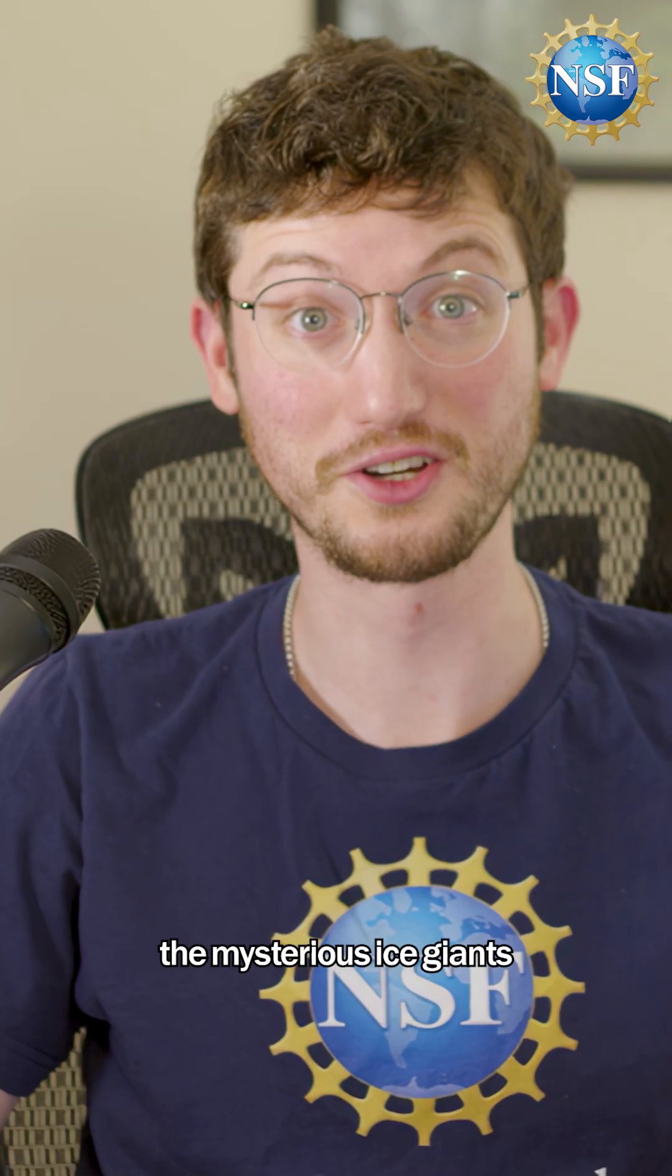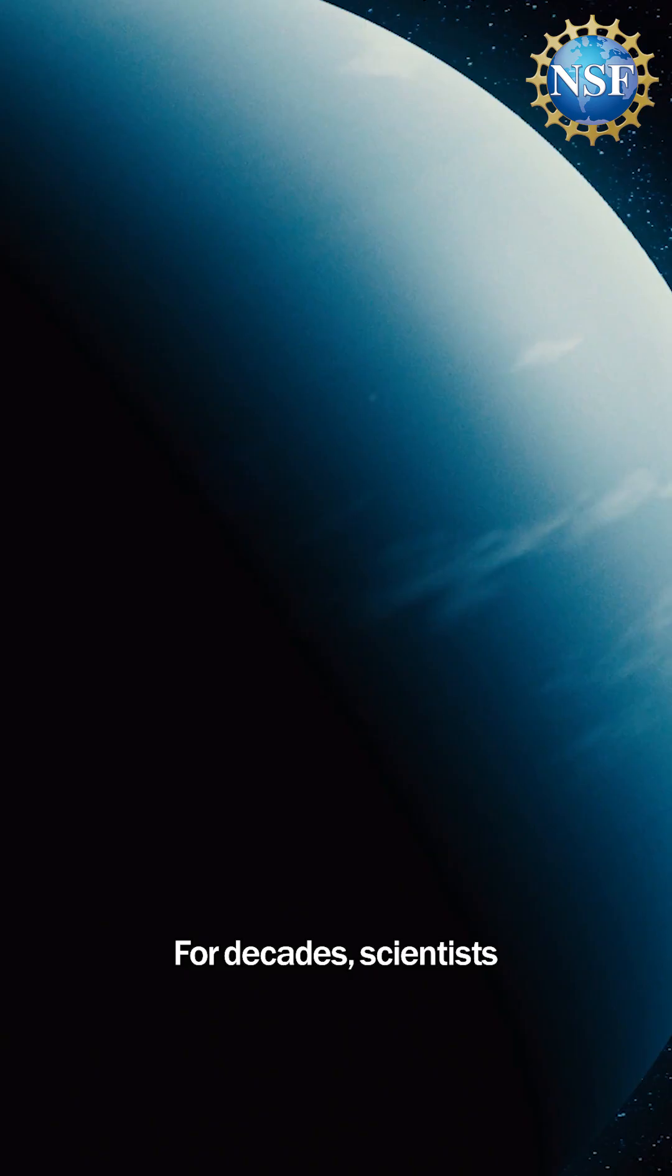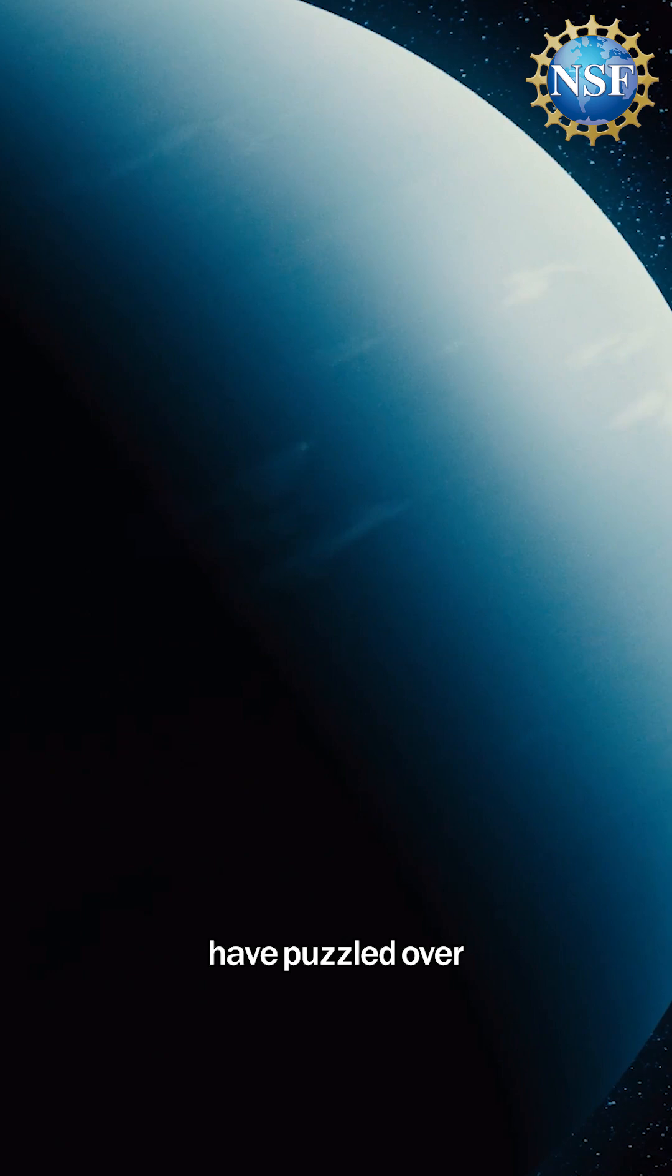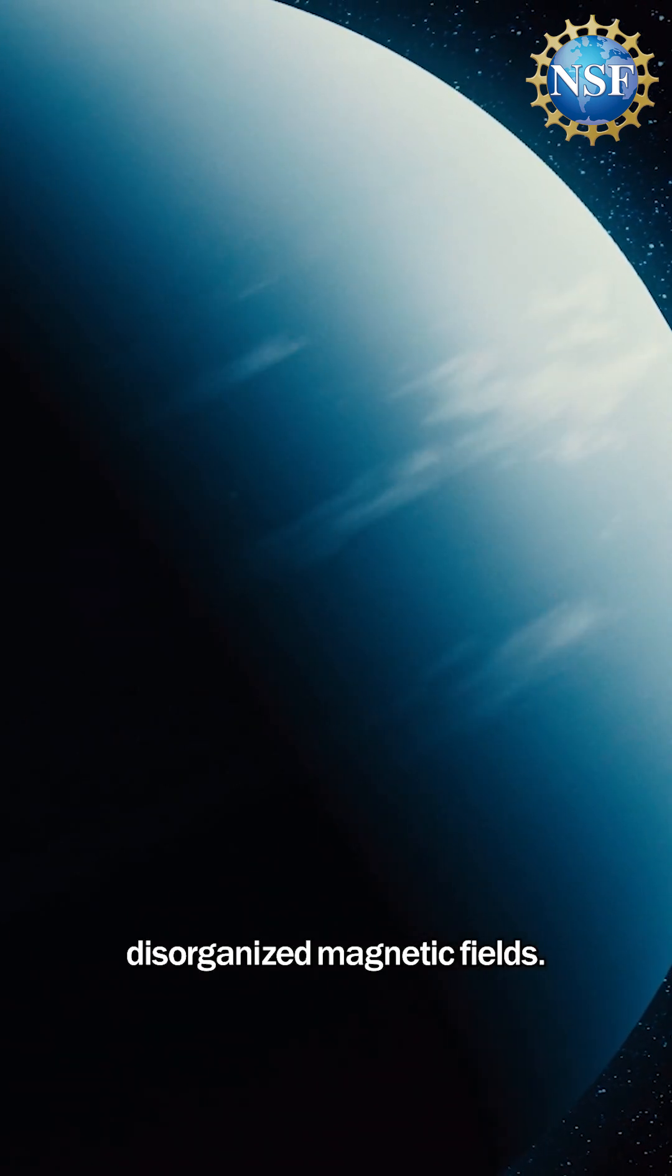Uranus and Neptune, the mysterious ice giants of our solar system. For decades, scientists have puzzled over their strange disorganized magnetic fields.